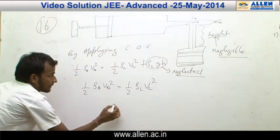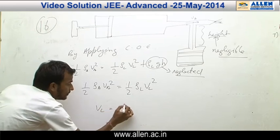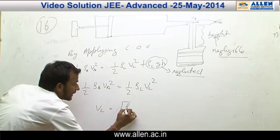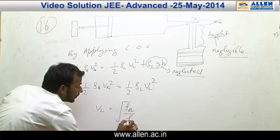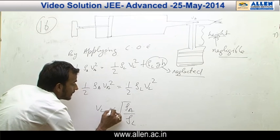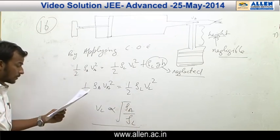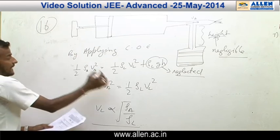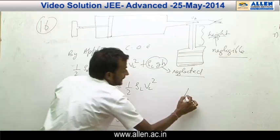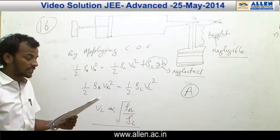Therefore, v_l is proportional to the square root of rho_a upon rho_l, which is option A in the paper. Therefore, the answer for this question is A.